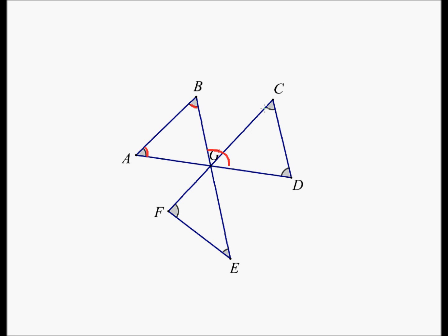Using a very similar argument, this angle in green plus this angle in green should equal this angle in green. If this angle is A, these two angles should add up to 180 minus A, and this angle alone should be 180 minus A. So they better be equal.